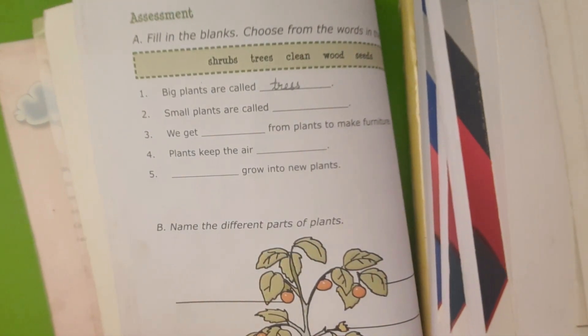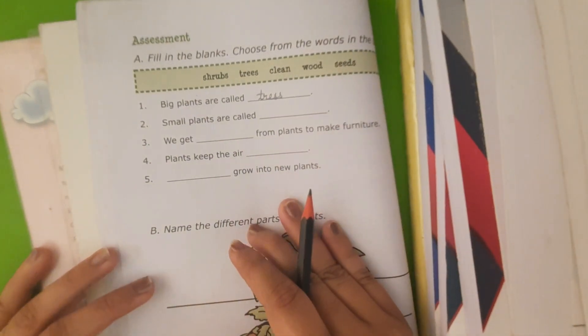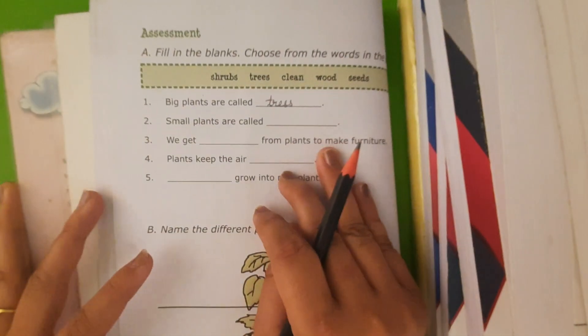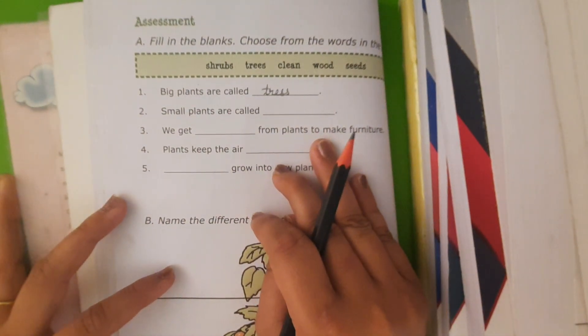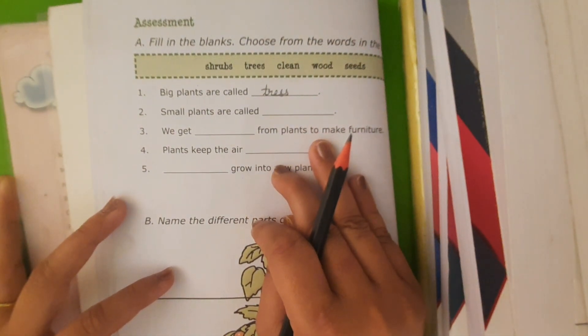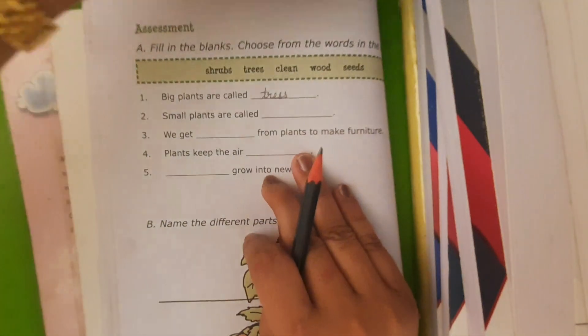Good morning students. Welcome to e-learning classes. Today we are going to do book exercises of chapter number 5, plants for class first subject EVS.